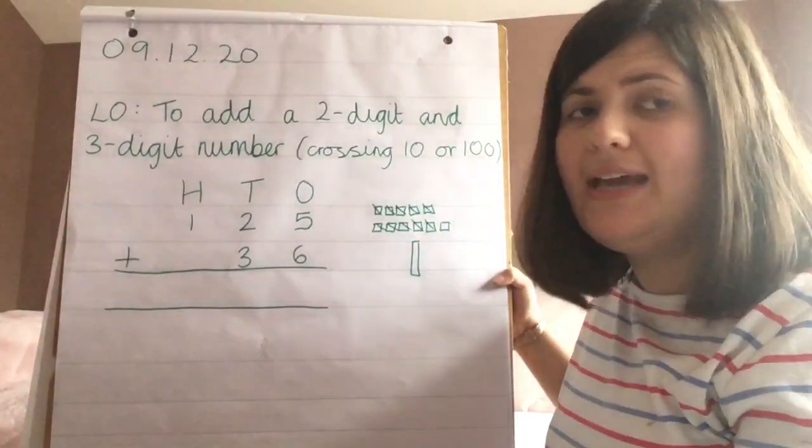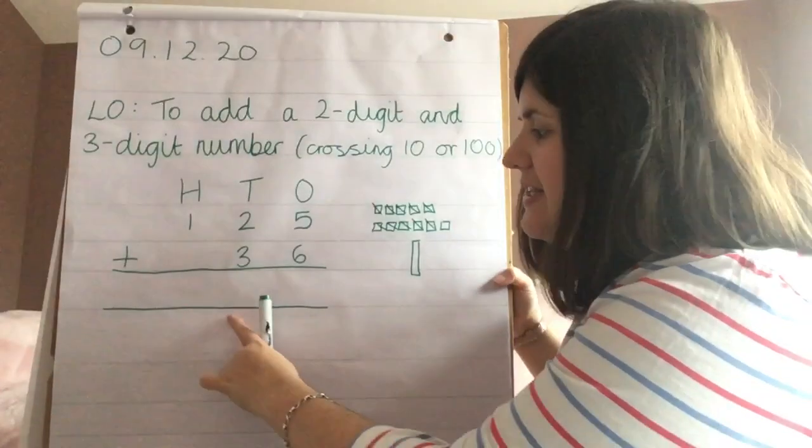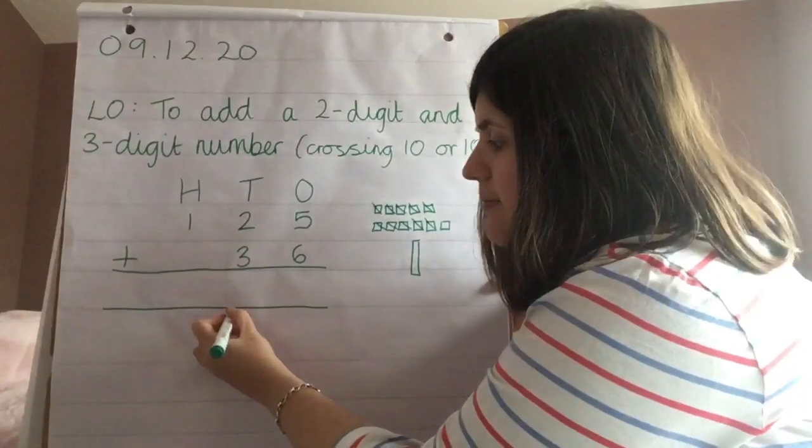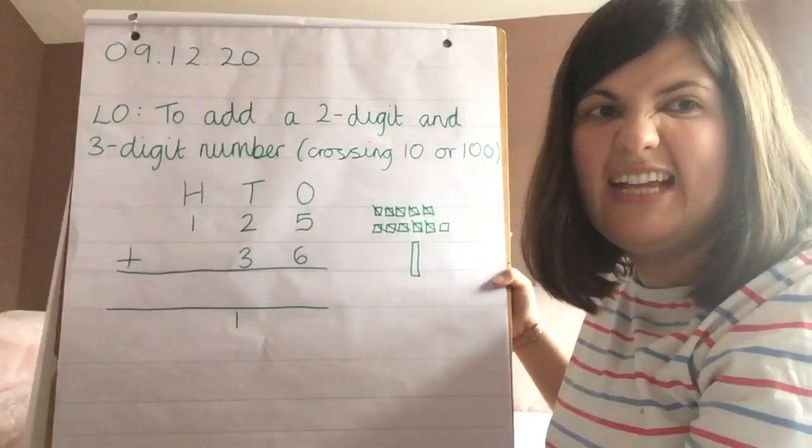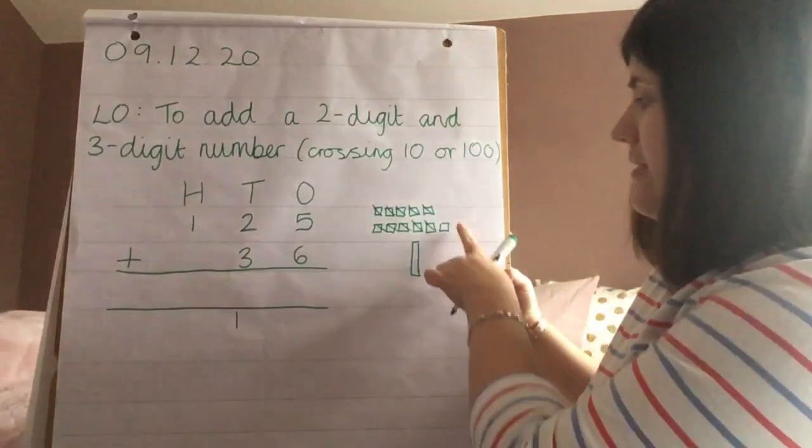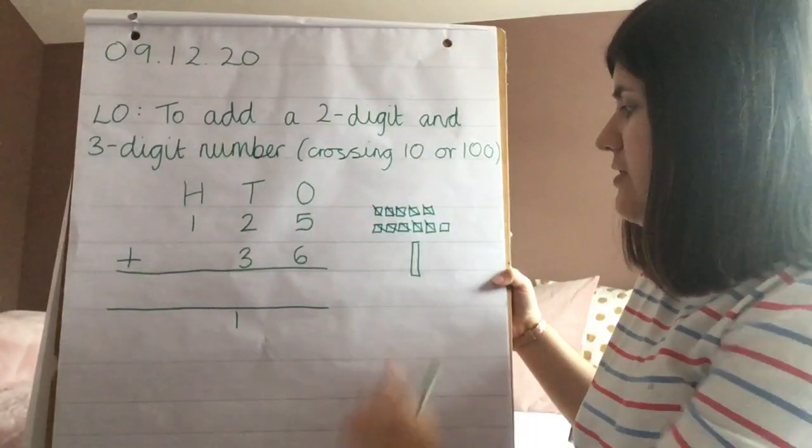Remember, I show that exchange by carrying the ten over here, so I'm going to write that down here so I don't forget to add it later on. Then I look at how many I've got, so it makes eleven, so that's one left in that column.